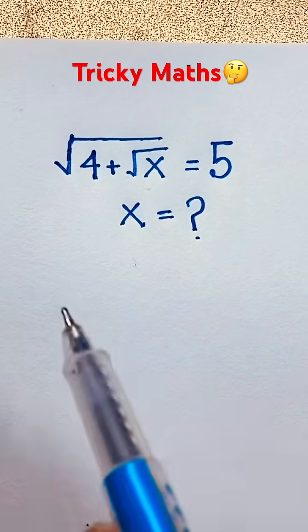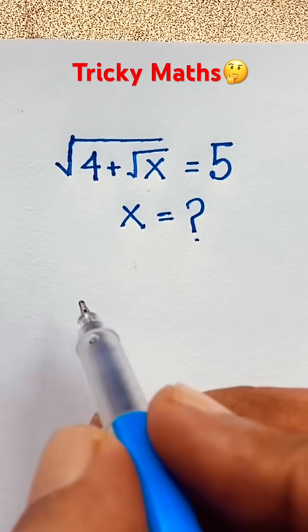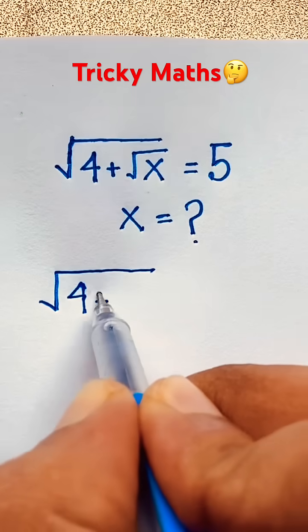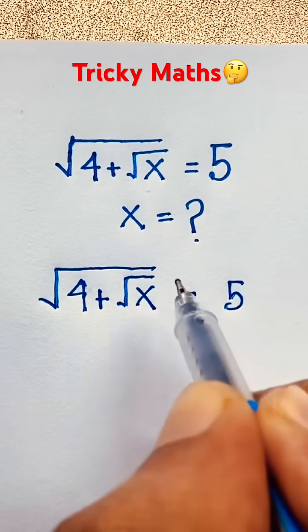How to solve this square root math problem: square root of 4 plus square root of x equals 5. x is equal to what? So our question is square root of 4 plus square root of x equals 5.